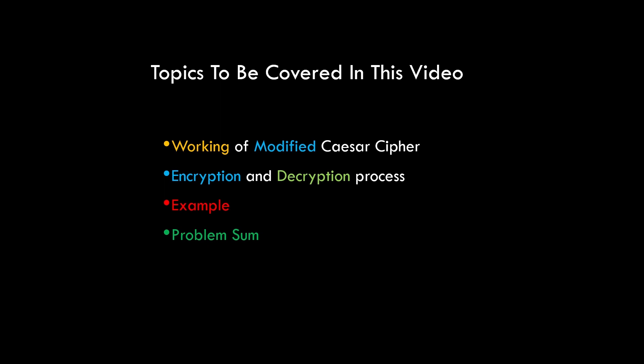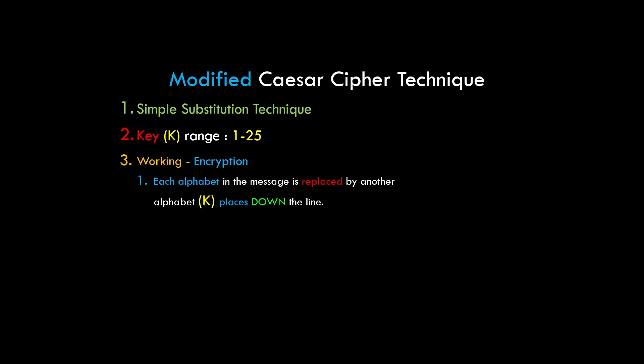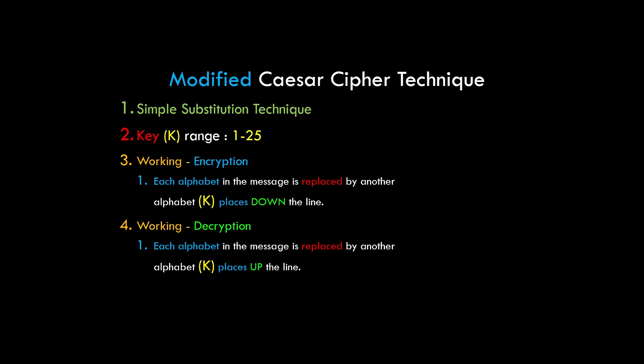Modified Caesar cipher is another simple substitution cipher technique. In this technique we assume a key value k that ranges from 1 to 26, which is the total number of alphabets. During encryption, each alphabet in the message is replaced by another alphabet k places down the line. During decryption, each alphabet in the message is replaced by another alphabet k places up the line.